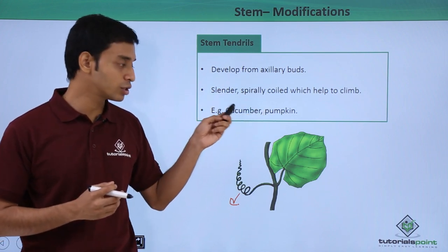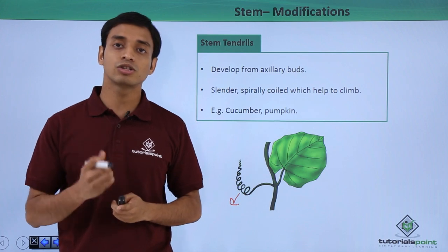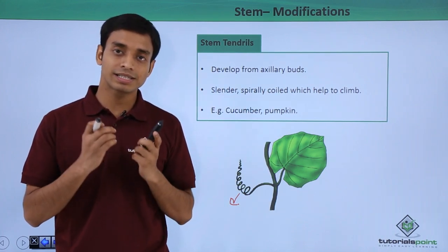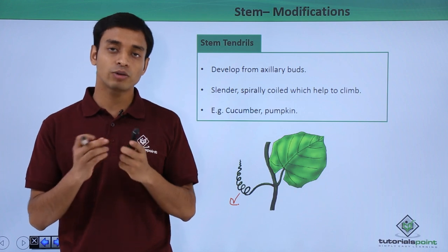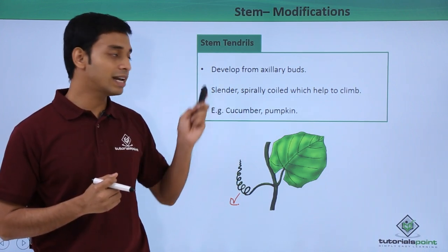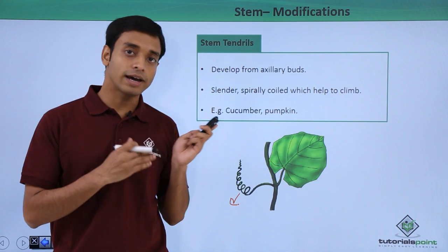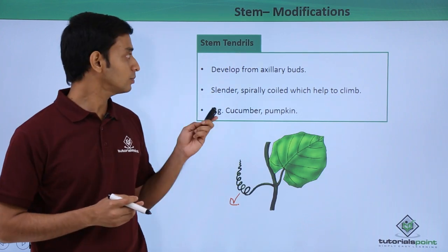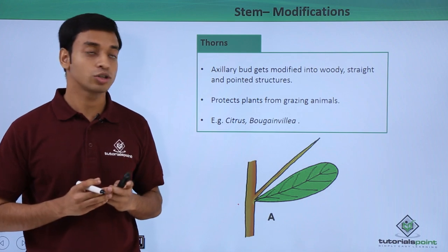These structures arise in plants that do not have a proper woody stem. The stems of these plants are quite weak and flexible, so spirally coiled tendril-like structures arise to help in the climbing of the plants.